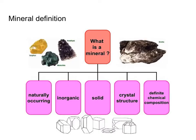We already talked about this: minerals are naturally occurring, inorganic, have a crystal structure, and a definite chemical composition. Water ice is a mineral; liquid water is not. Obsidian glass is not a mineral. Sulfur, malachite, amethyst, biotite — all these other things we're looking at today will be minerals.